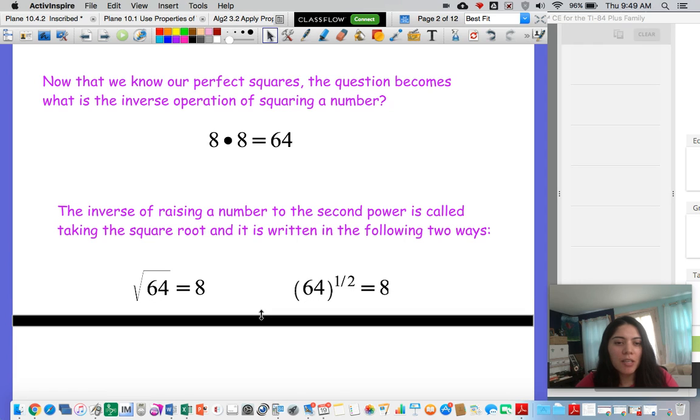So the question is what number times itself two times gave you 64? Well we know 8 times 8 is 64. So if we take the square root of 64 that will be equal to 8 and we use this little symbol it almost looks like a division sign but it has a diagonal. Okay, that is asking me for the square root.